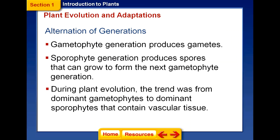Plants also have two major generations. The first is called the gametophyte, which is the generation that produces gametes like sperm and eggs. The second is called the sporophyte, which is the generation that produces spores and seeds. During plant evolution, the trend was from a dominant gametophyte to a dominant sporophyte that contains vascular tissues.